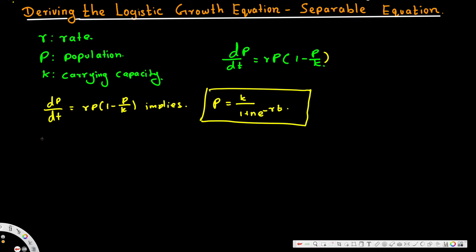Let m be equal to 1 over k. If we do that, the equation becomes dp/dt is equal to r·p·(1 minus m·p). This is a separable differential equation because we can separate the t terms and p terms.